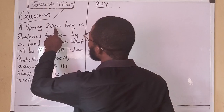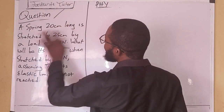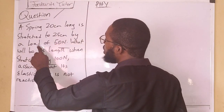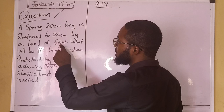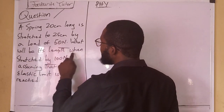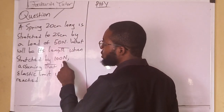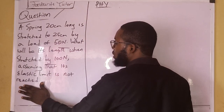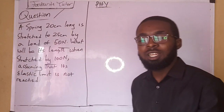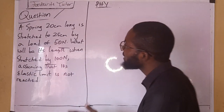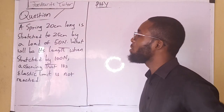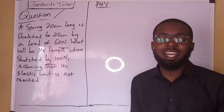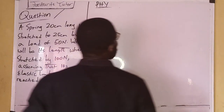A spring 20 centimeters long is stretched to 25 centimeters by a load of 50 newtons. What will be its length when stretched by 100 newtons, assuming that its elastic limit is not reached? This means Hooke's equation is applicable. Before we go further, let us elaborate more on this question using a diagram, because I believe using a diagram helps us understand it better.